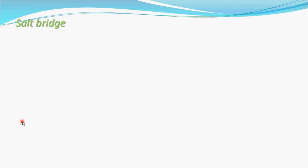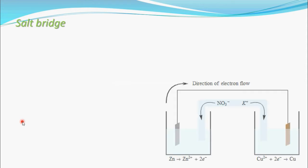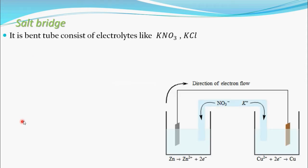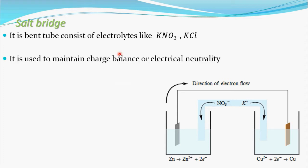What is a salt bridge? A salt bridge is a bent tube — this is a Daniel cell, and this bent tube is the salt bridge. It consists of electrolytes like KNO3 and KCl. This salt bridge consists of the electrolyte KNO3, which provides NO3⁻ and K⁺ ions.